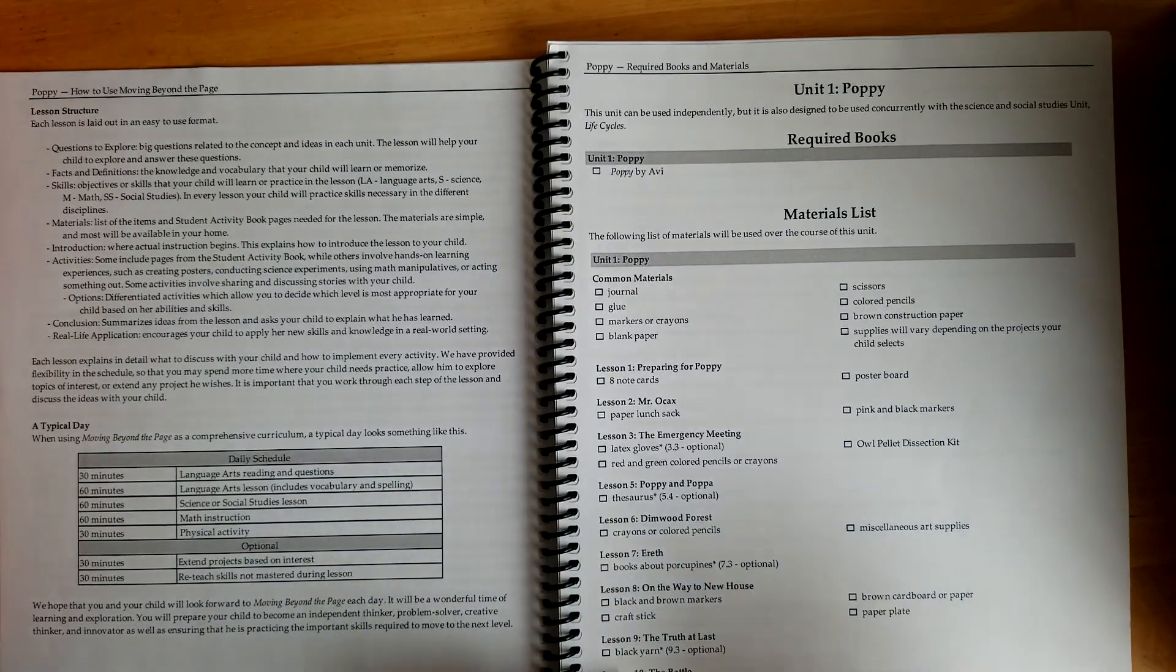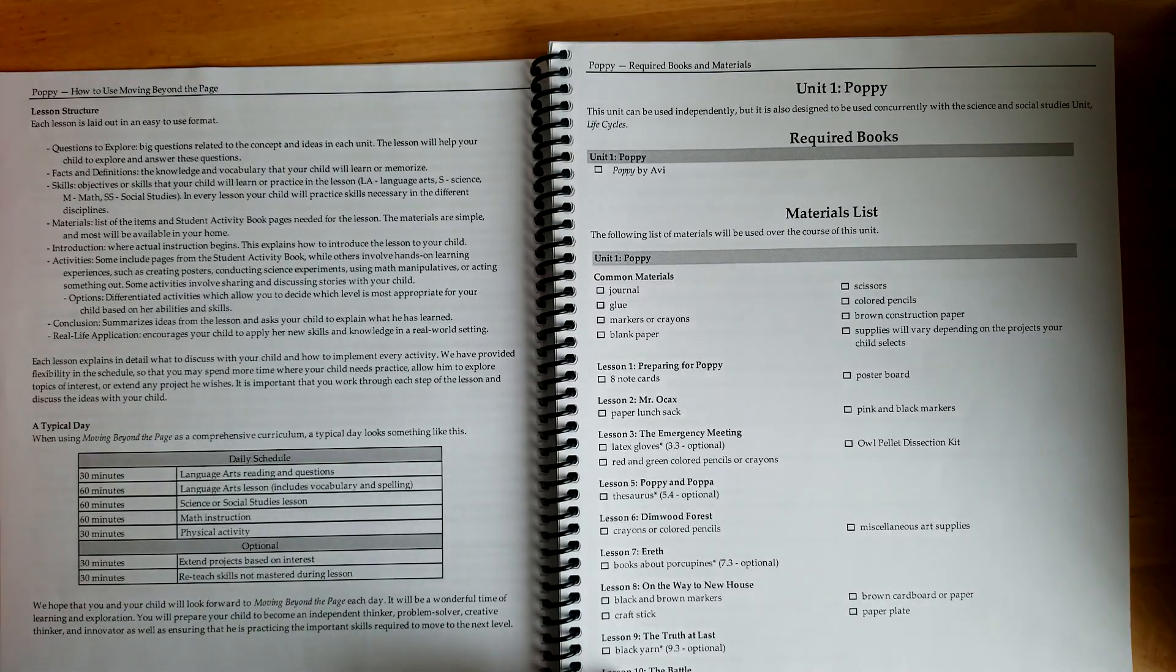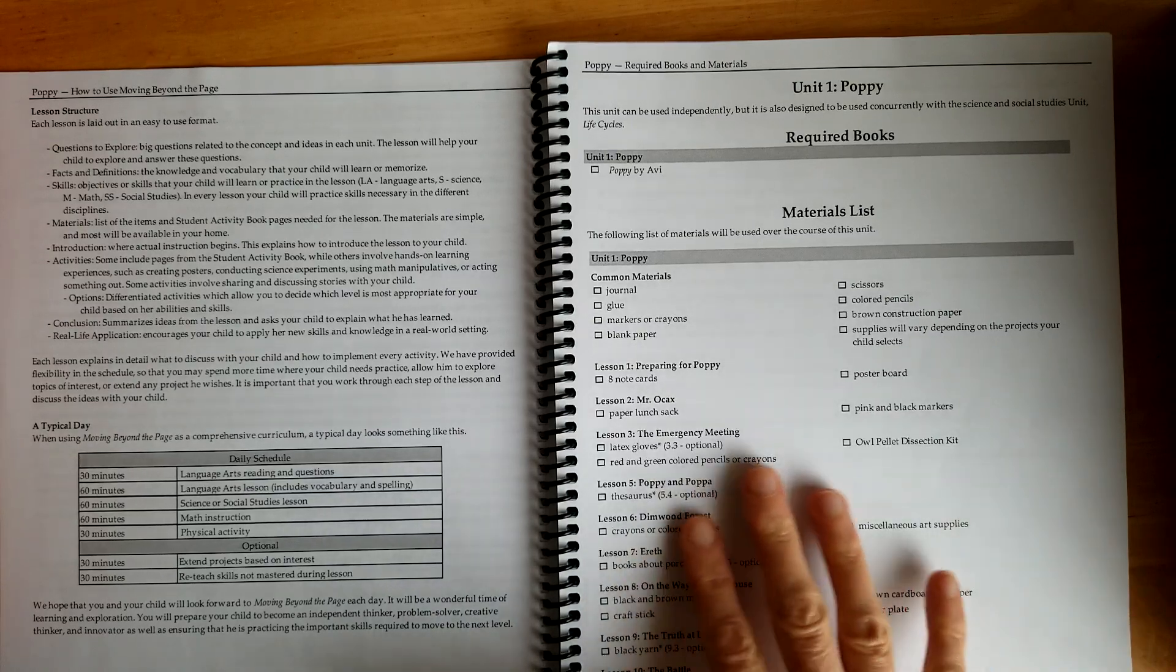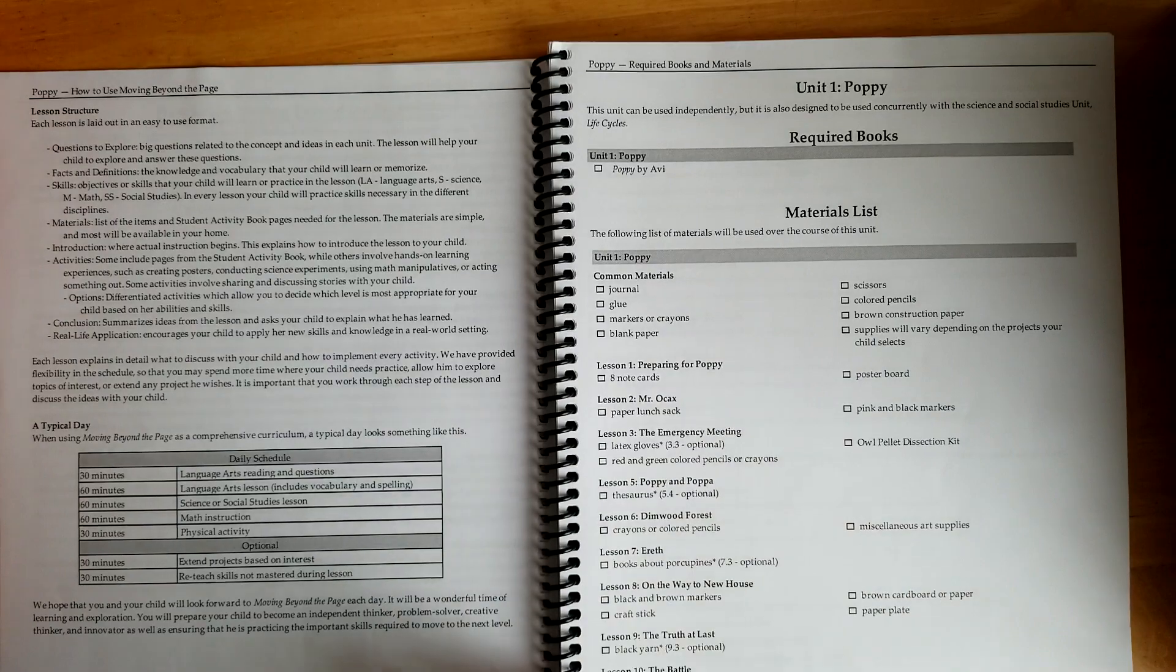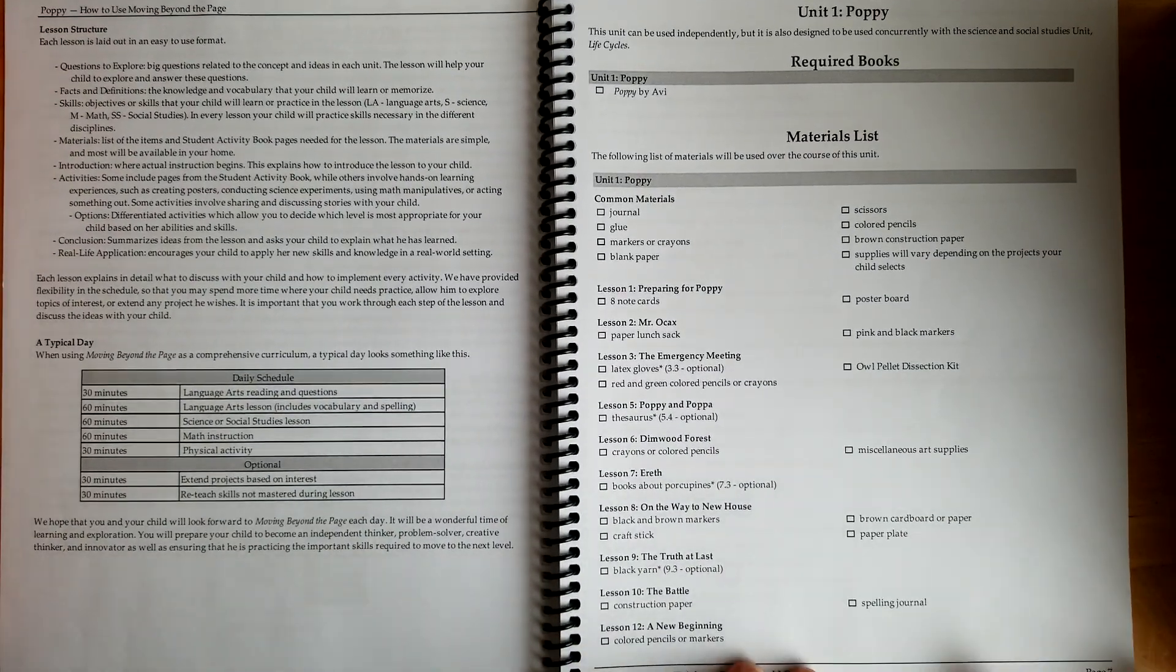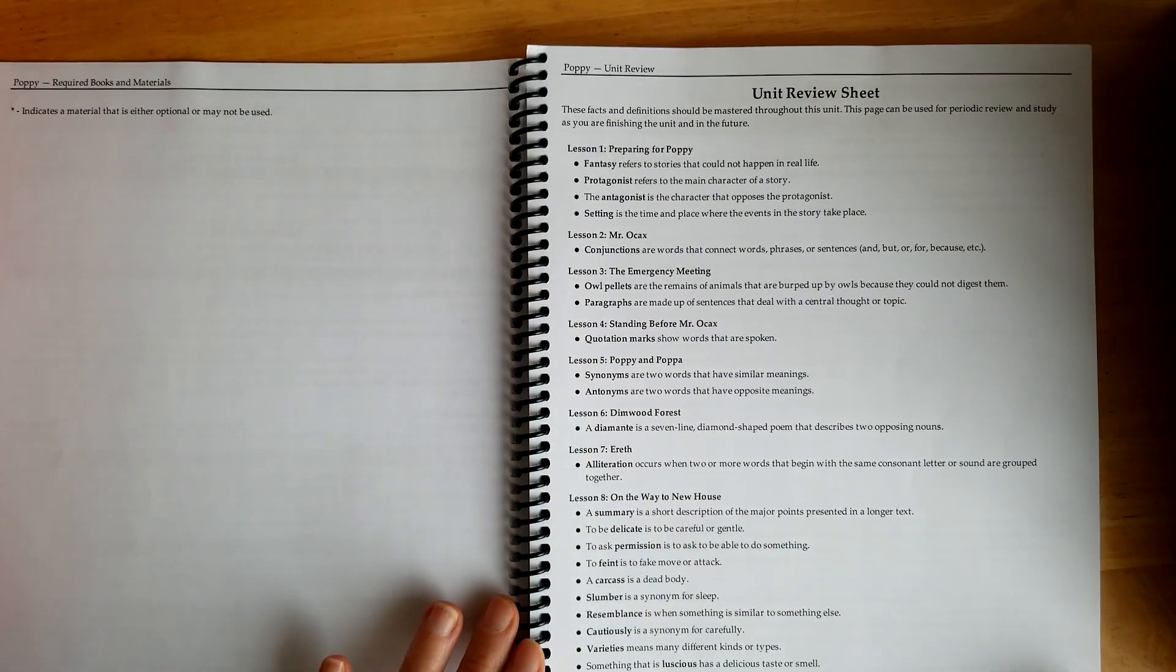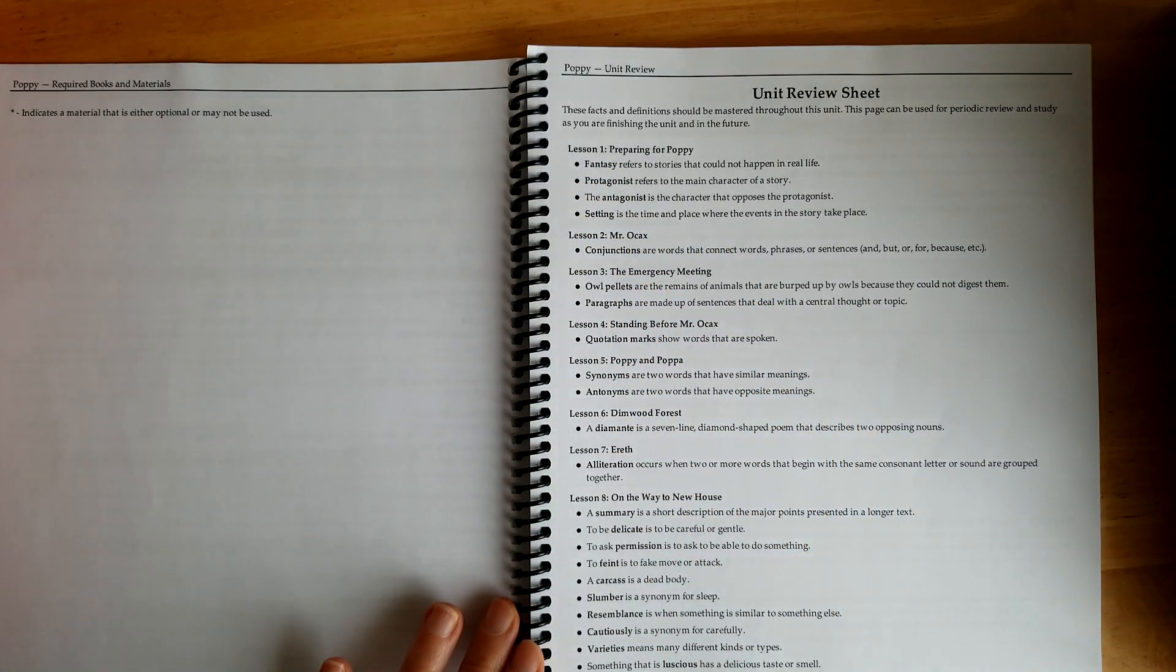In unit one it talks about the required books, and in this one it's just Poppy. The materials list has a bunch of stuff listed here. We didn't do some of this stuff, but this is the supplies list. This is the review sheet that covers what exactly you're going to go over in this unit study.